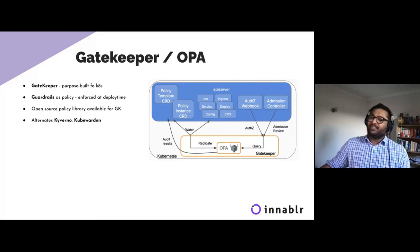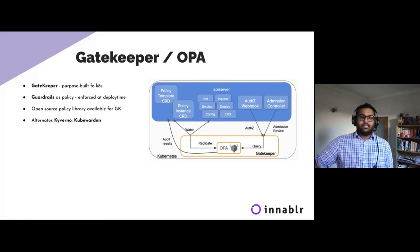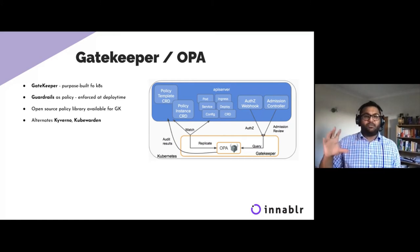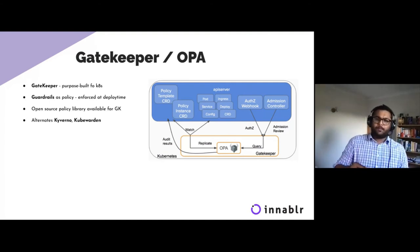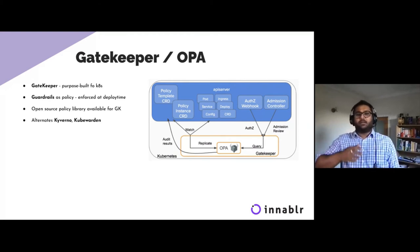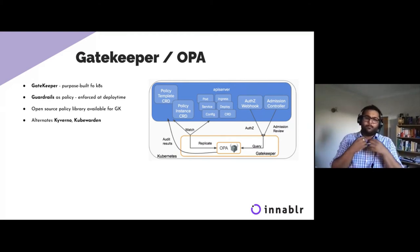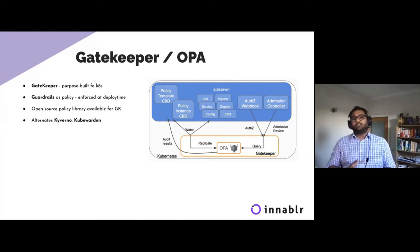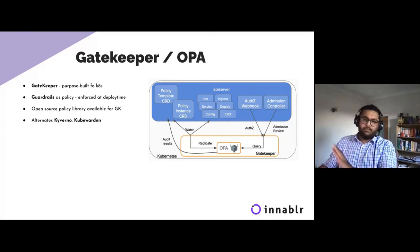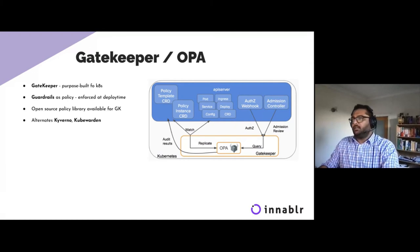Key takeaway: think of Gatekeeper OPA as central guardrails policy for your organization. If Rego is off-putting, alternatives include Kyverno, which is YAML-native, and Kubewarden, which is also very intuitive. But some form of admission controller that lets you define and enforce cluster-level policies is highly recommended.